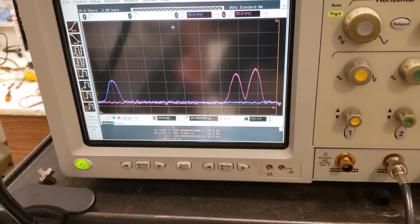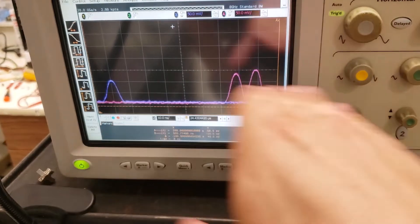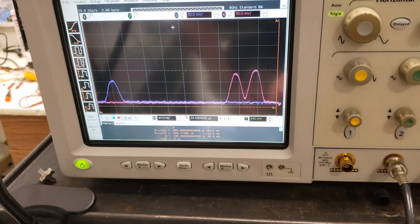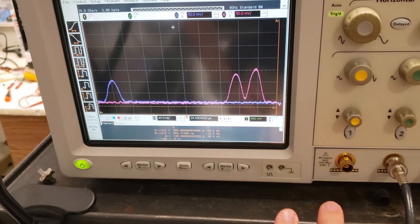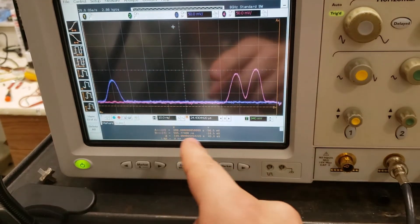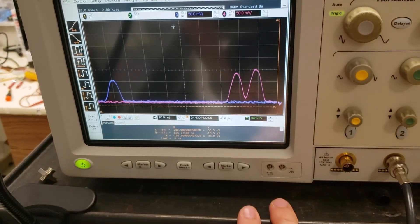So I hope that demonstrates how polarization maintaining fibers work. We have these two axes with different speeds of light, and that can actually be seen by the fact that this single pulse we send in gets split up into two components.